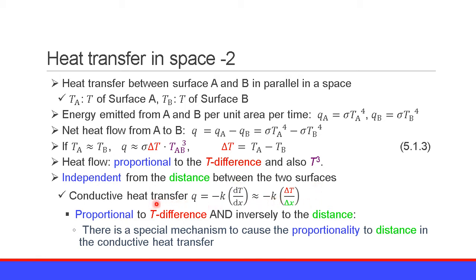On the other hand, conductive heat transfer, as we have already seen by Fourier's law, gives heat flow equal to minus thermal conductivity K times the temperature gradient dT/dx, which is nearly equal to minus K times delta T over delta X, where delta T is the temperature difference and delta X is the distance between two points. Therefore, conductive heat transfer is proportional to not only the temperature difference but also the inverse of the distance between two points. We need a special mechanism to account for this inverse proportionality in conductive heat transfer.